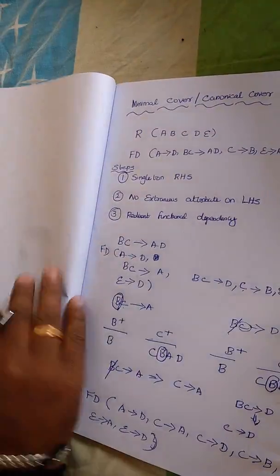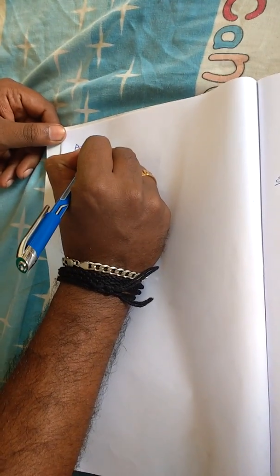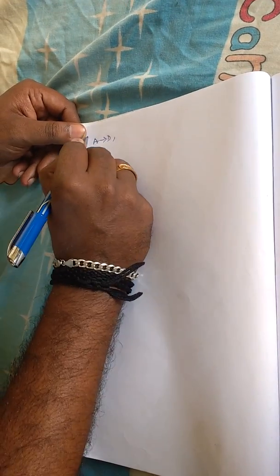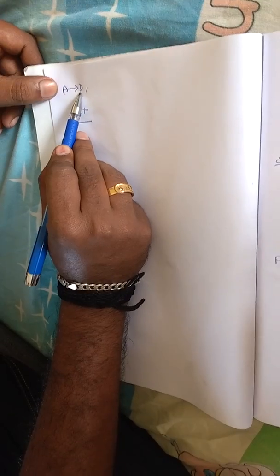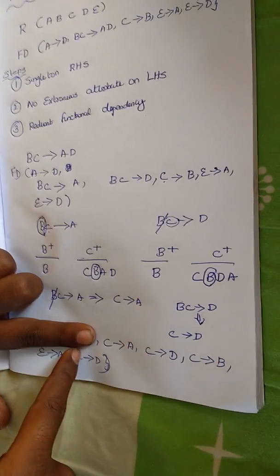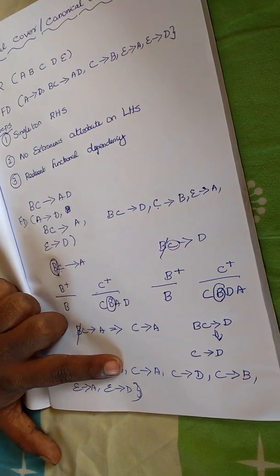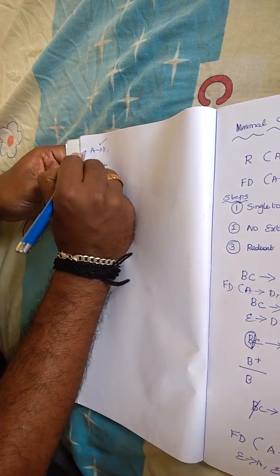The third rule: there should be no redundant functional dependencies. We take each one in turn. For A determines D, we find the A closure excluding this FD. By reflexivity A gives A. Scanning, A is not determining any other value without this FD. So we cannot eliminate A determines D.